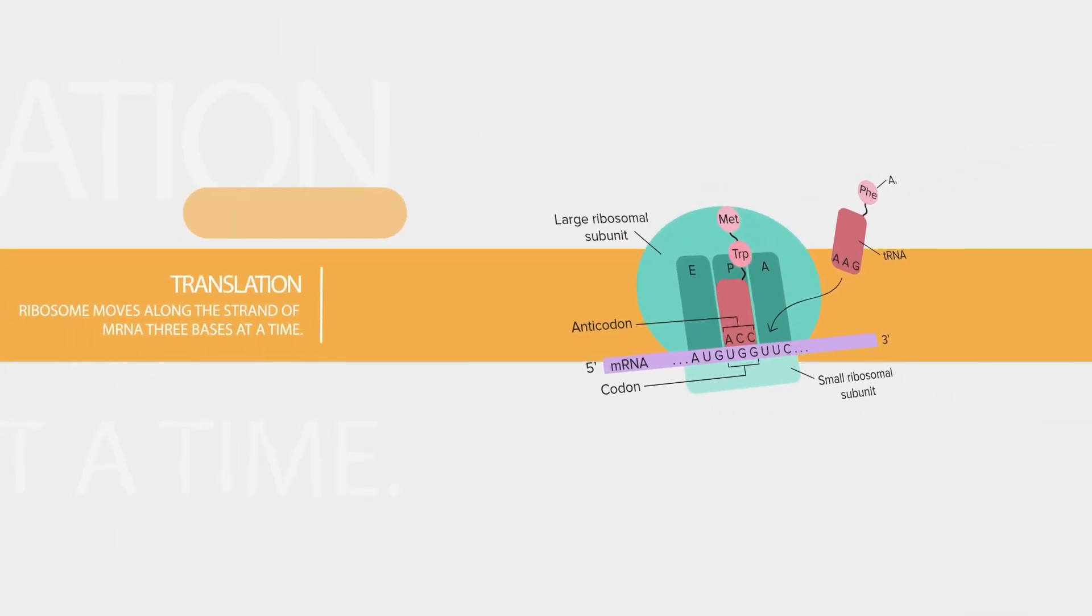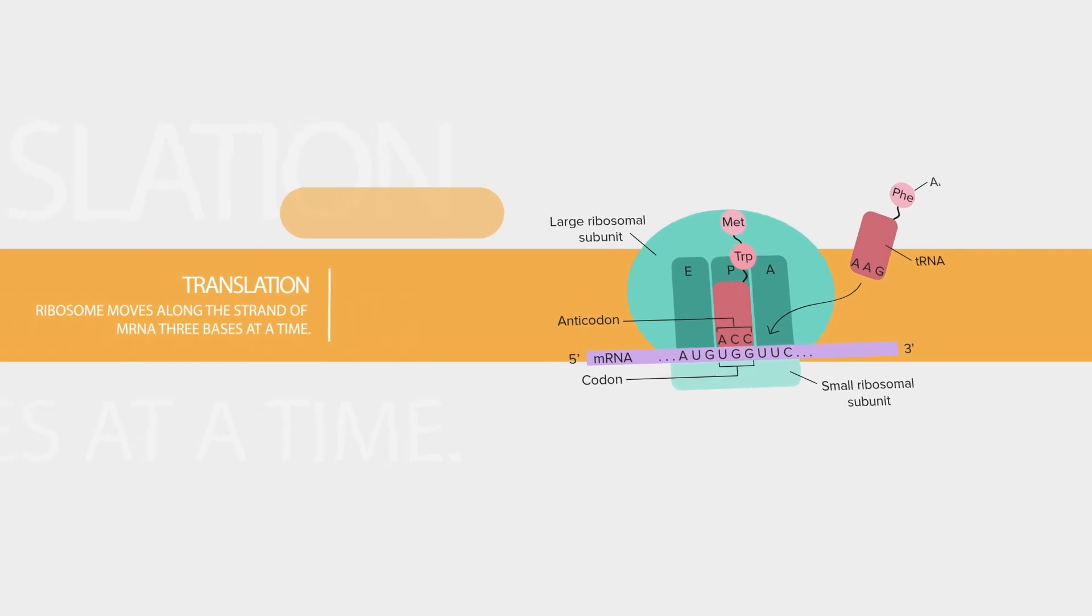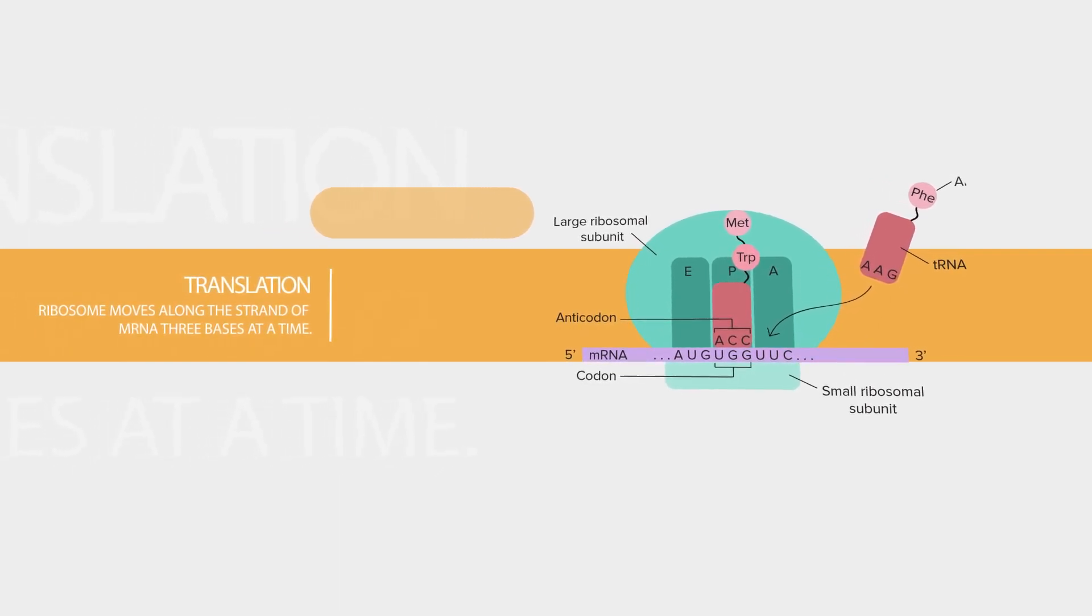Translation is a process wherein a structure called a ribosome moves along the strand of the mRNA three bases at a time. The ribosome attaches specific amino acids in place according to the sequence of bases in the mRNA triplets. When the ribosome reaches the end of the mRNA strand, it detaches itself from the assembled chain of amino acids. The chain then folds up to form the newly completed protein.